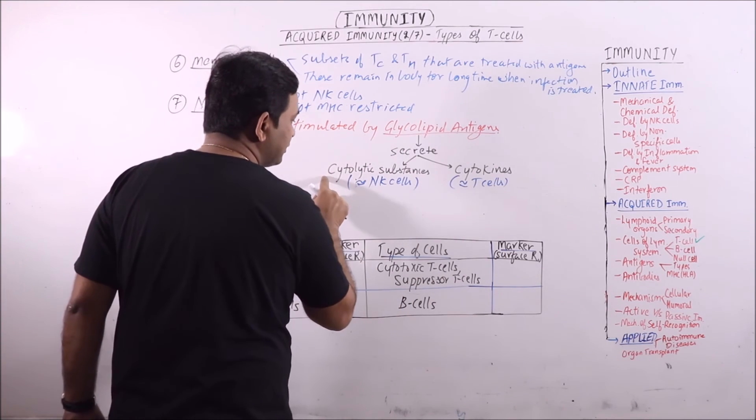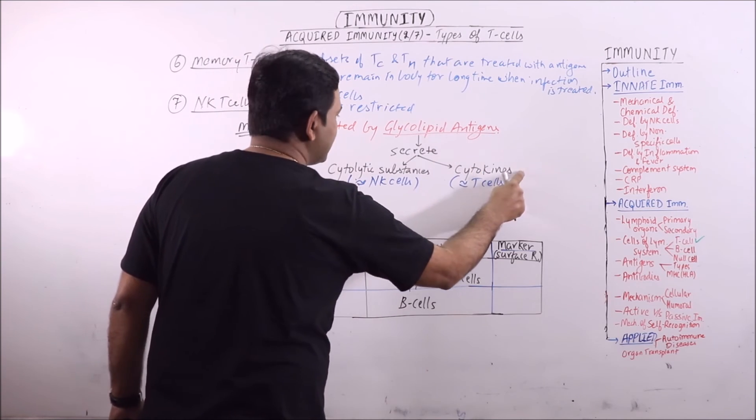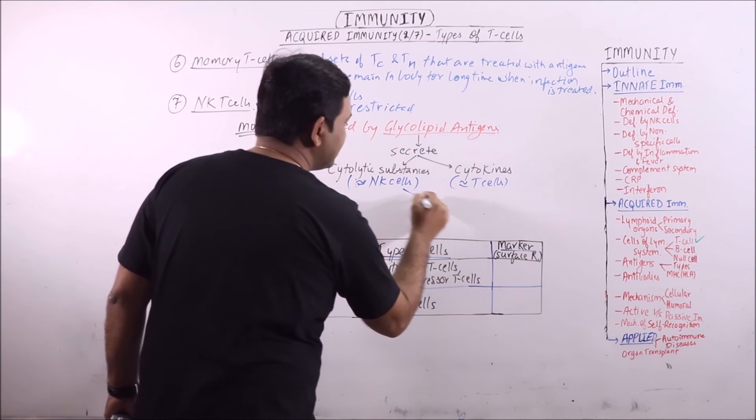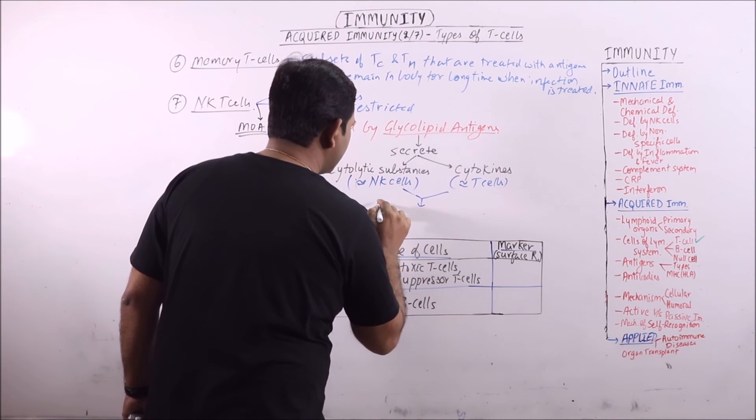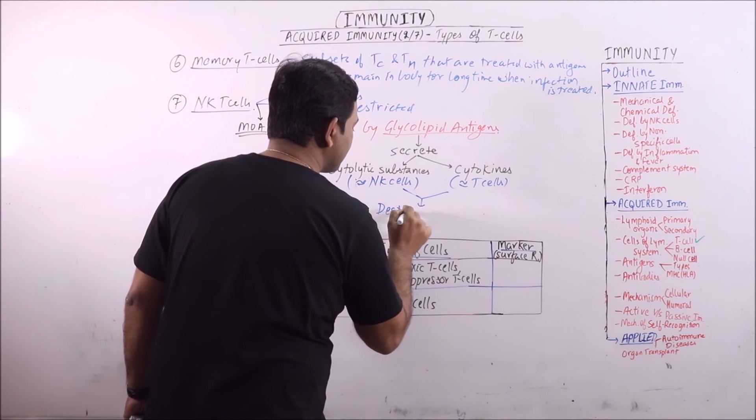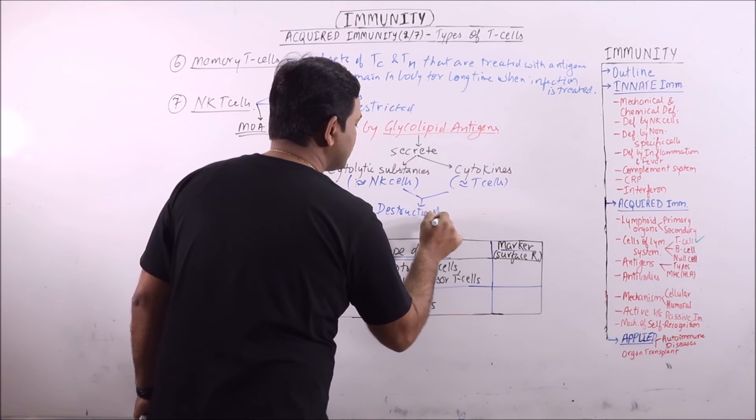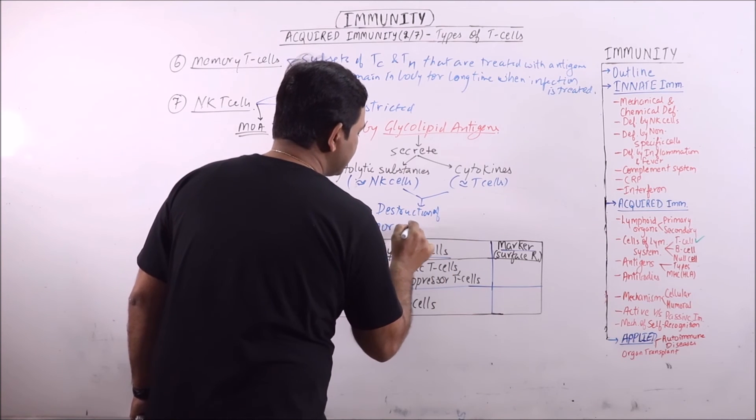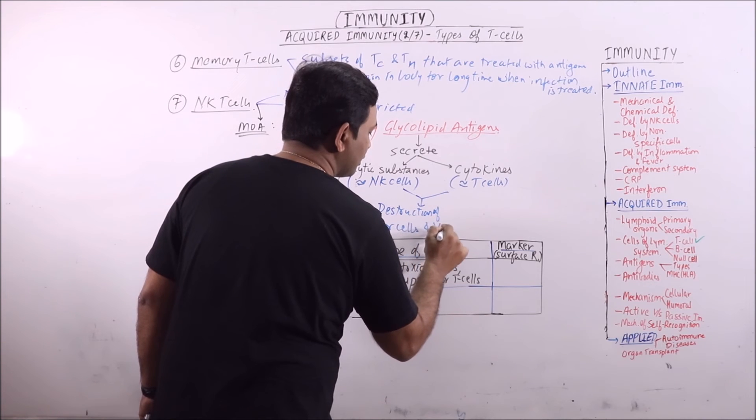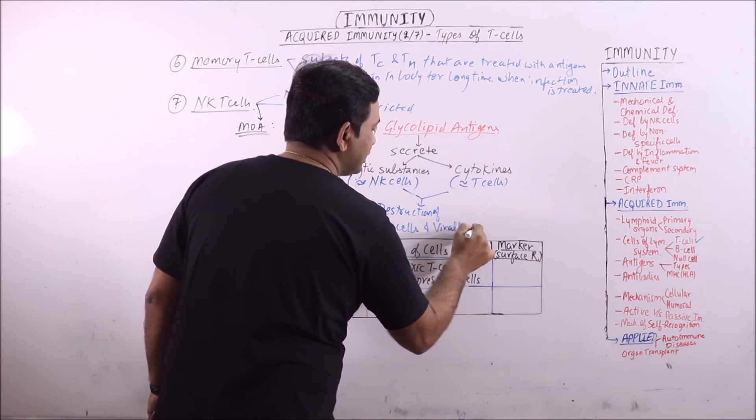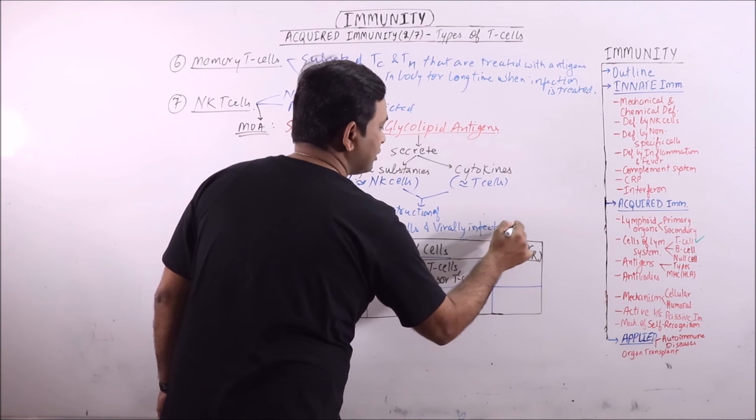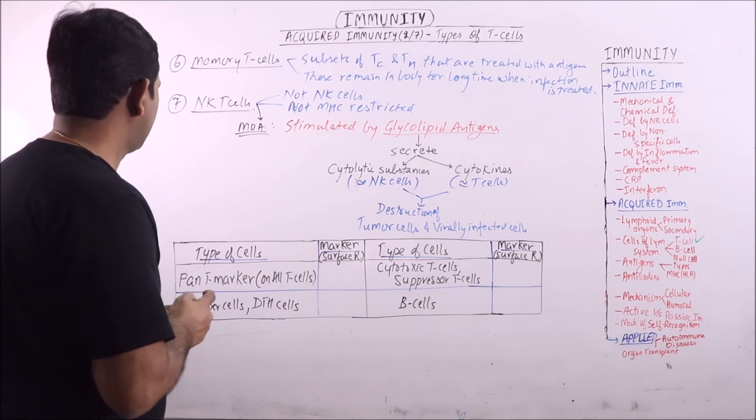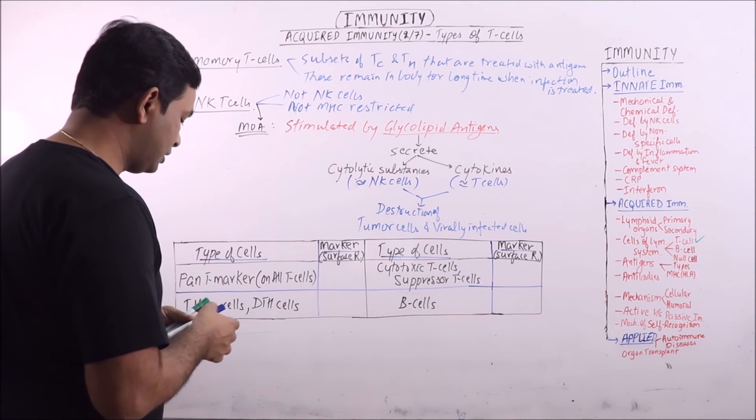The release of cytolytic substances is the action of NK cells, while the secretion of cytokines is the action of T cells. Because it is releasing both cytolytic substances as well as cytokines, it is termed as NK T cells. And these secretions will result in destruction of tumor cells and virally infected cells like herpes. These are NK T cells.